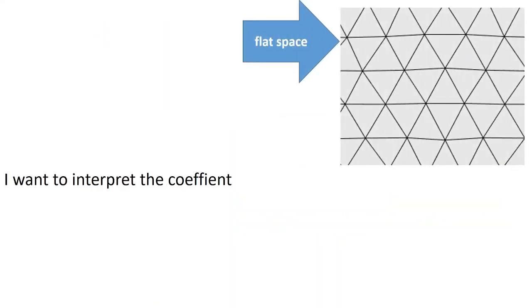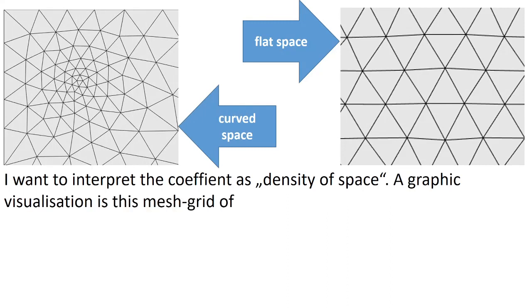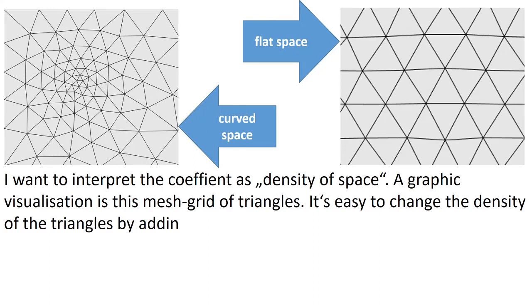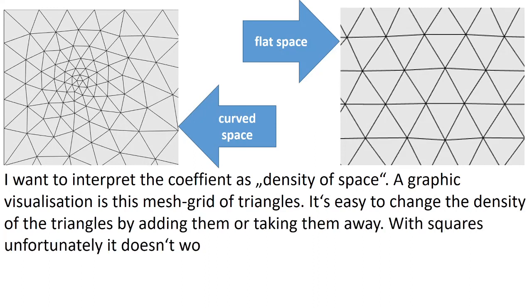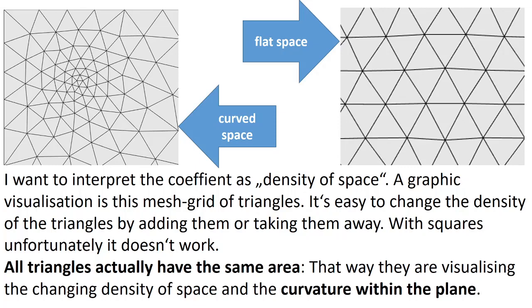I want to interpret the coefficient as density of space. A graphic visualization is this mesh grid of triangles. It's easy to change the density of the triangles by adding them or taking them away. With squares, unfortunately, it doesn't work. All triangles actually have the same area. That way, they are visualizing the changing density of space and the curvature within the plane.